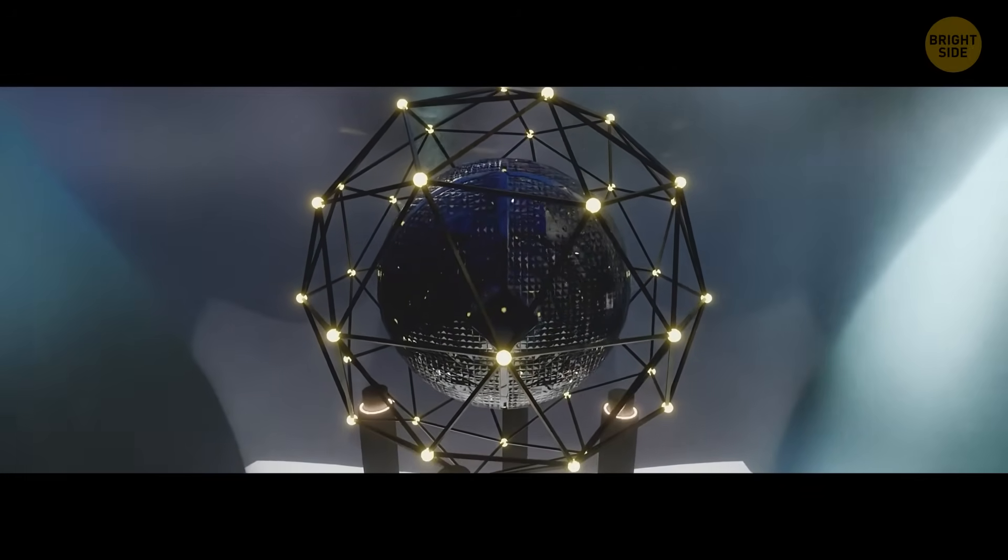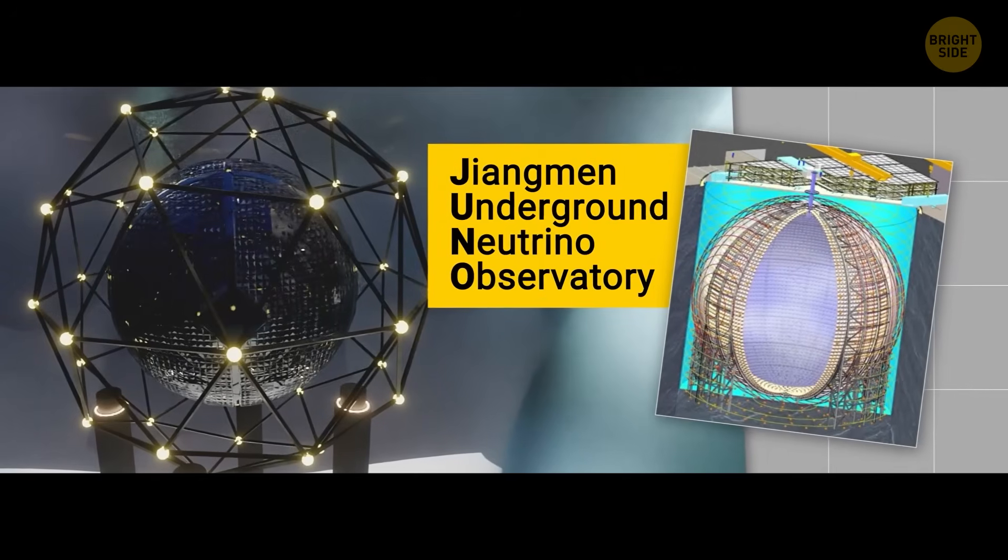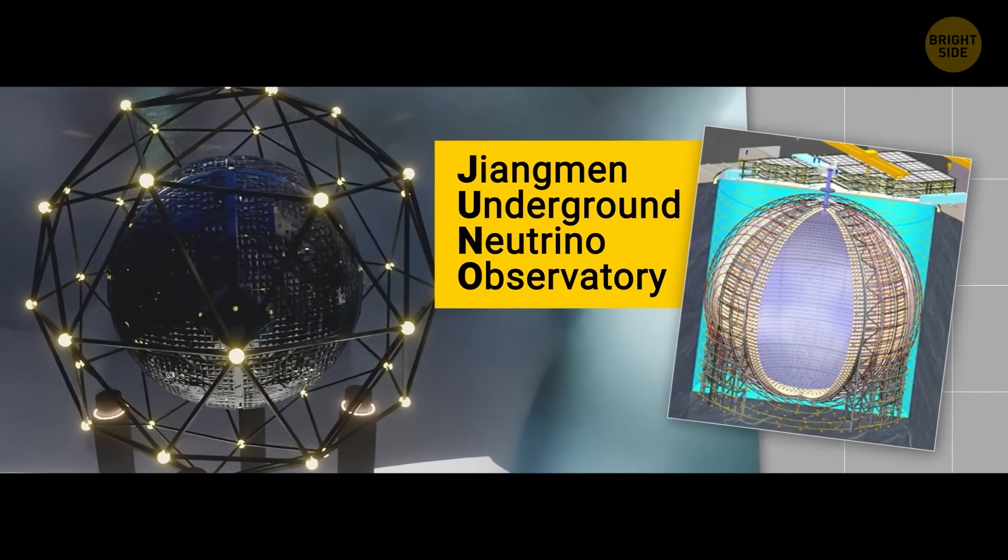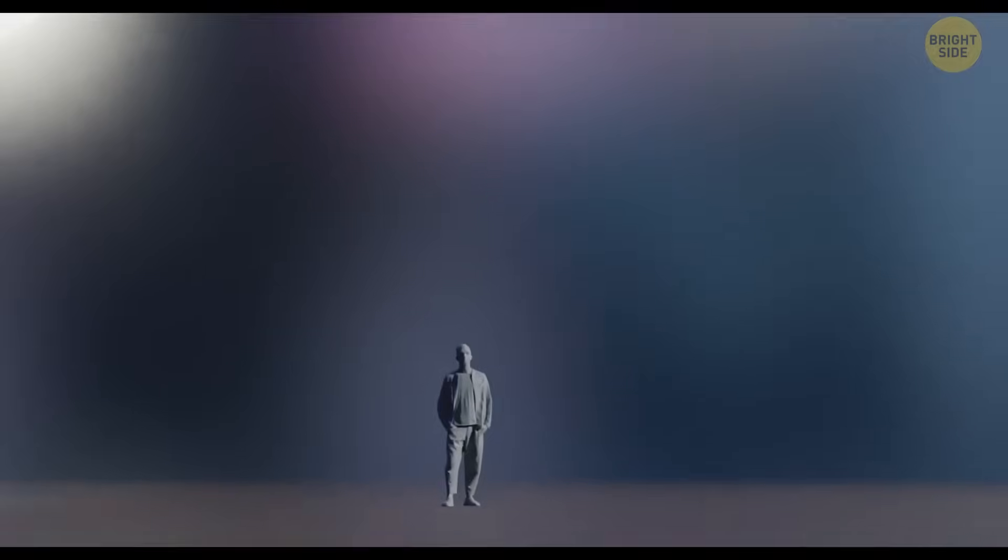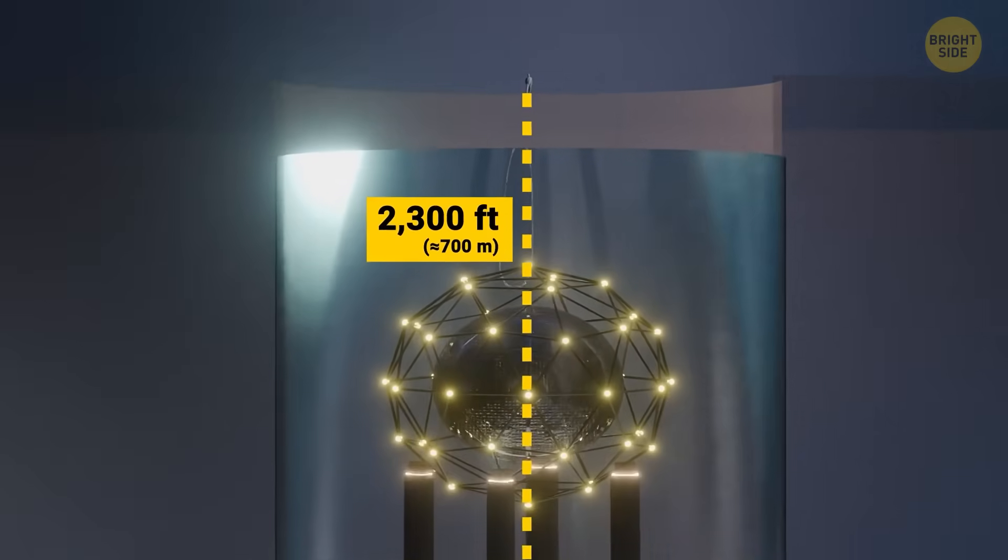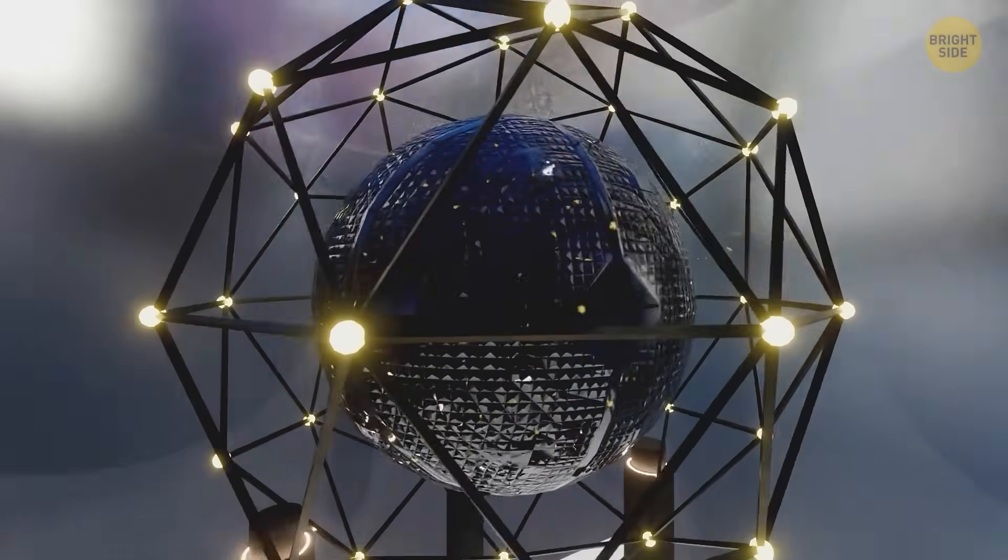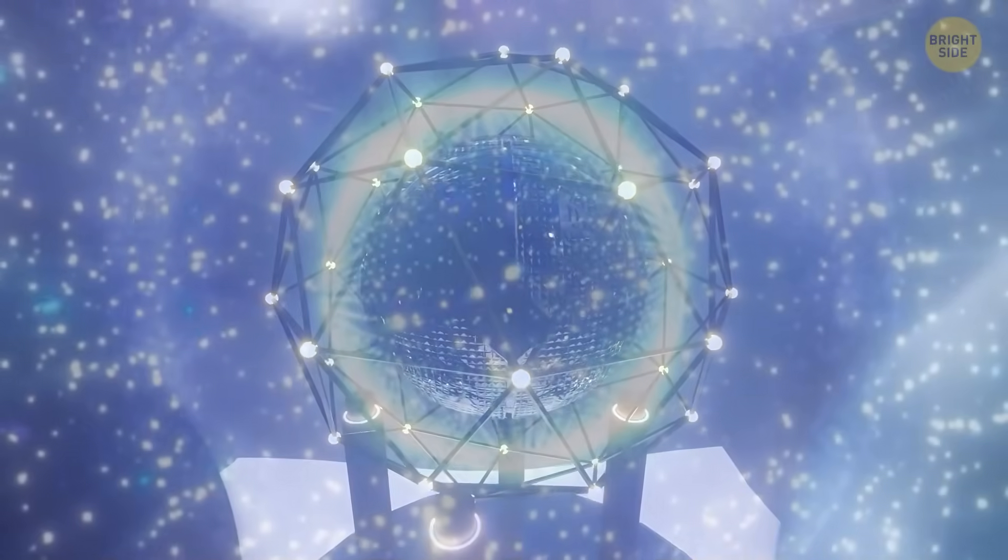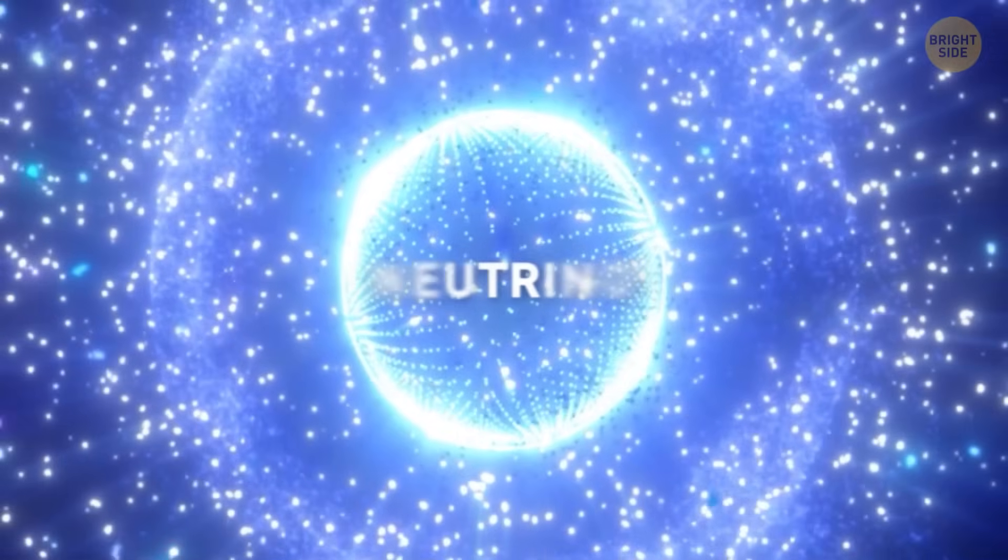This extraordinary machine, called the Jiangmen Underground Neutrino Observatory, or Juno for short, is hidden from the prying eyes 2,300 feet underground. It's designed to study one of the strangest and most mysterious particles in the universe, the neutrino.